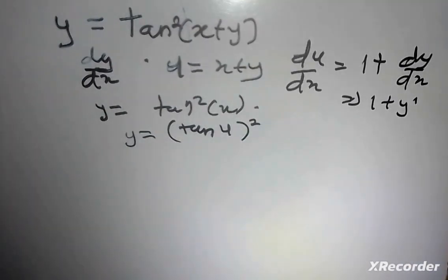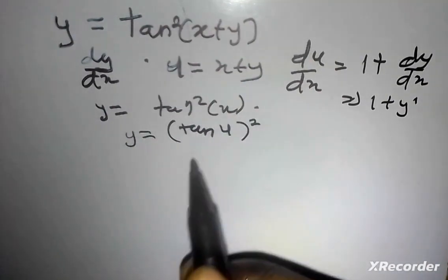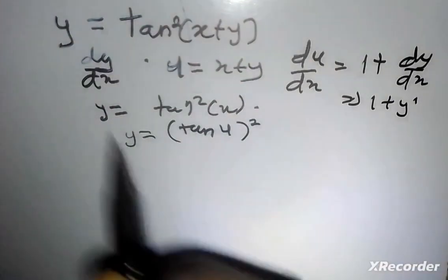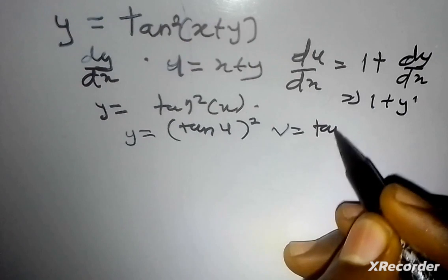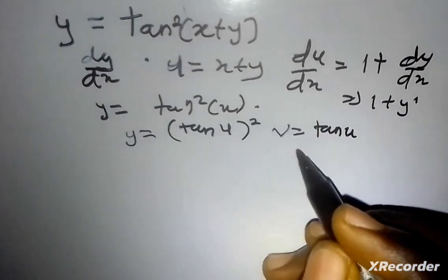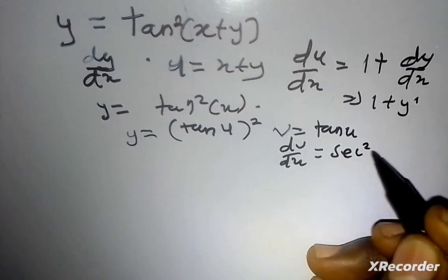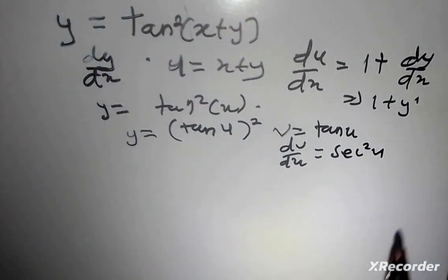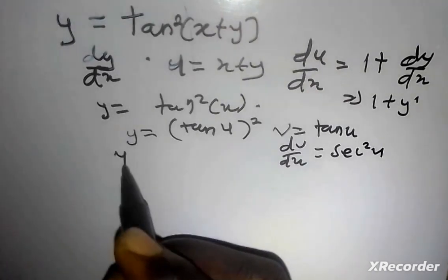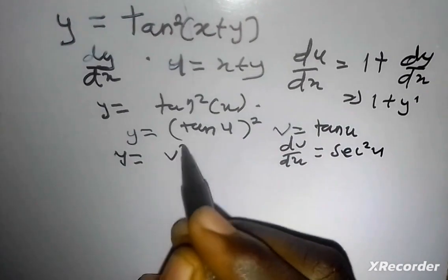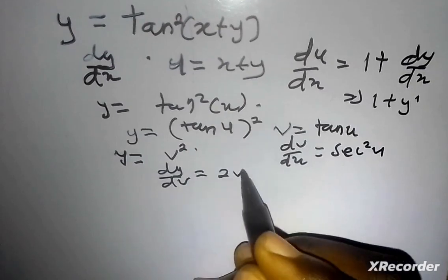We are going to first tackle what is inside before the outside. Let v be equal to the inner function tan u. Therefore, dv/du will simply be equal to sec squared u — when you differentiate tan, you get sec squared. Now y simplifies to v squared, and dy/dv gives me 2v.